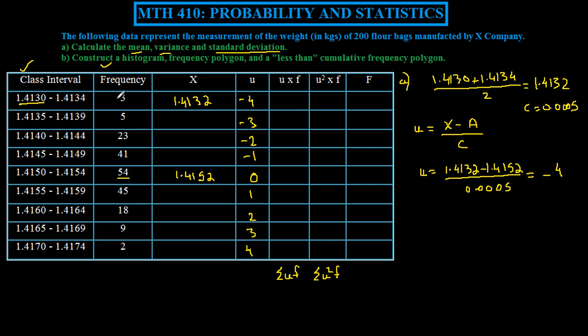u times f: the frequency, the number of times we have a flour bag in this interval is 3. 3 times minus 4 is minus 12. To get u squared f, we can take the frequency and multiply by minus 4 squared, or multiply this column by this column. 3 times 16 is 48, or 4 times 12 is also 48.